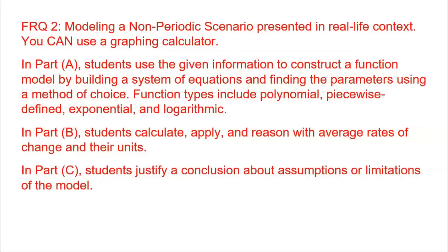In Part A, you'll be given information to construct a function model — you'll build a system of equations using two pieces of information, then solve for the parameters. In Part B, students calculate, apply, and reason with average rates of change. In Part C, students justify a conclusion about assumptions or limitations of the model. The framework is pre-laid out; you just don't know the real-world scenario.